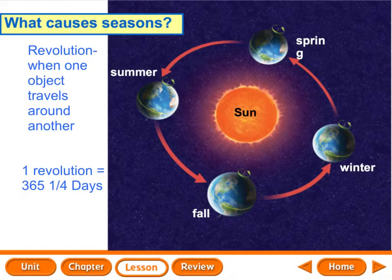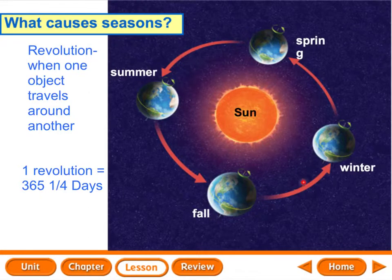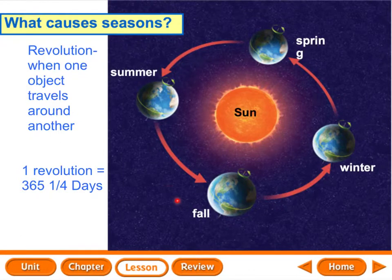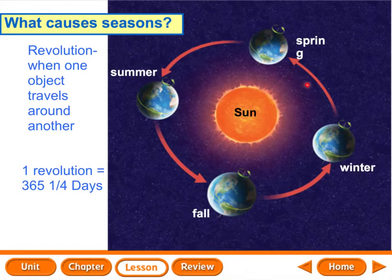We're not only rotating and spinning, but we're also revolving. Revolution is when one object travels around another. The path that a revolving object takes is its orbit. As you can see here, Earth is revolving around the sun, going around and around. The arrows indicate the path that it's taking — that's the orbit. So the actual act of going around is revolution, and the path or shape that it takes is its orbit.